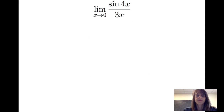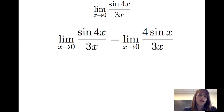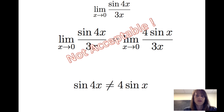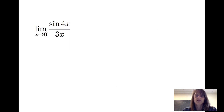Let's consider the limit of sine of 4x over 3x as x goes to 0. Sometimes students write that the limit of sine of 4x over 3x is the same as the limit of 4 times the sine of x divided by 3x as x goes to 0. This is not acceptable because it makes it appear that sine of 4x equals 4 times sine of x, and we know that is not true. So let's consider a better approach to finding the limit of sine of 4x divided by 3x as x goes to 0.